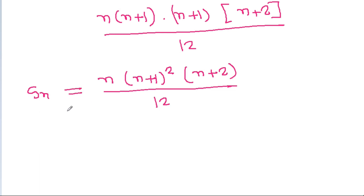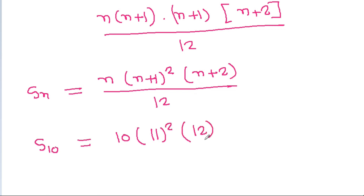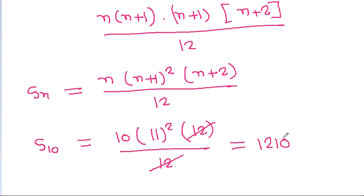The sum of the first 10 terms, S₁₀, equals 10 × 11² × 12 / 12. The 12 cancels, giving 10 × 121 = 1210. So 1210 is the sum of the first 10 terms.